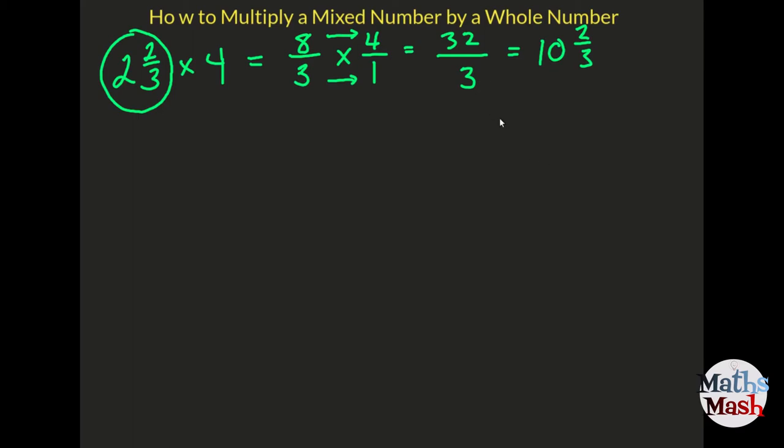So again, you might find it helpful that if you see that you're going to be using the denominator 3, to write your 3 times table down the side just as a check.